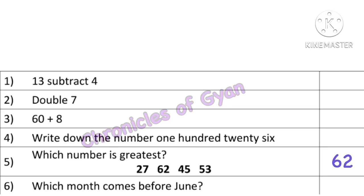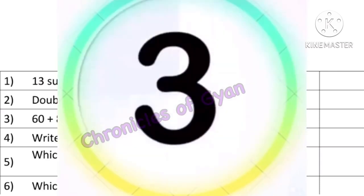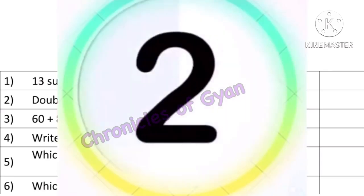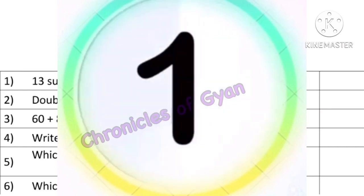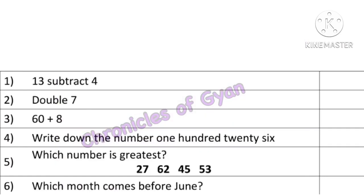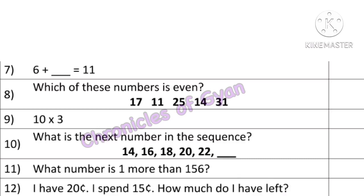Question 6: Which month comes before June? Everyone knows the months — January, February, March, April, May, and then June. So the month of May comes before June.